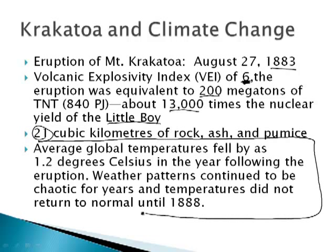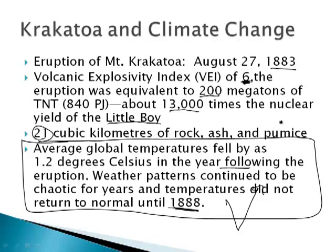The average temperature of the earth fell by 1.2 degrees Celsius for a year. It produced some of the most stunning sunsets ever, but that ash was reflecting sunlight back into space, making it colder. It didn't return to normal until 1888 — about a five-year issue — as the ash settled down from the upper atmosphere.